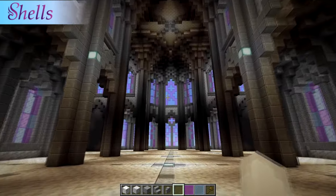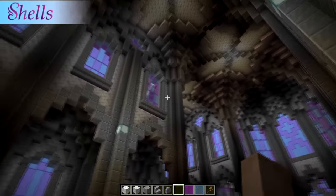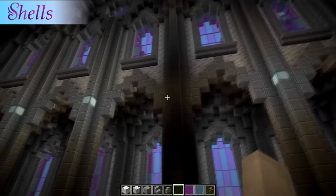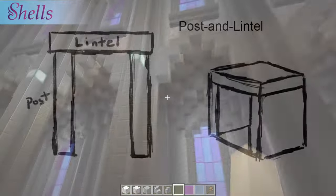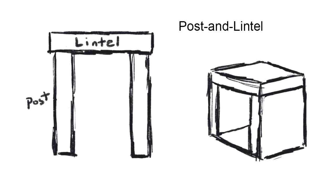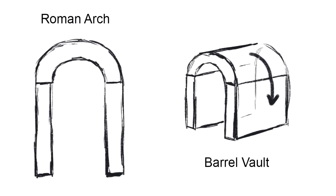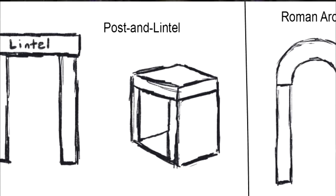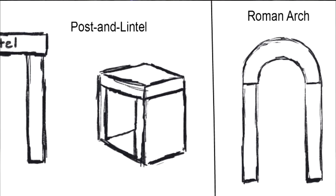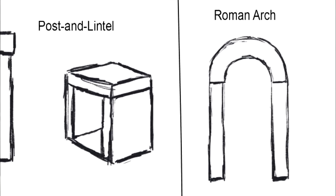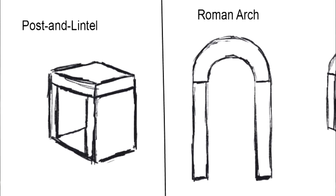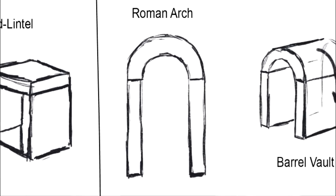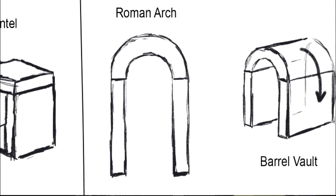So what is a gothic arch and why are they made? Before there were gothic arches the two types of architecture were post and lintel and Roman arches, and one of the main issues with those is that they put a lot of weight on the walls, which meant that you couldn't really poke big holes in it for windows.